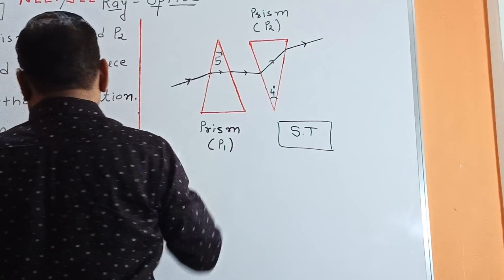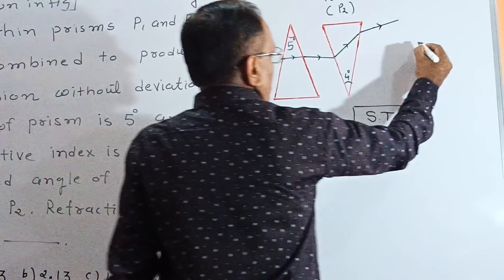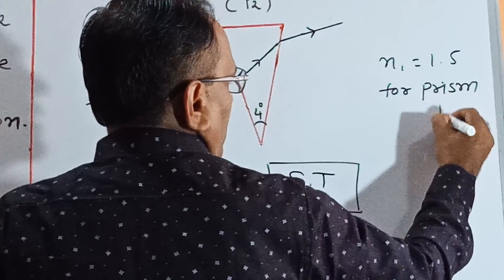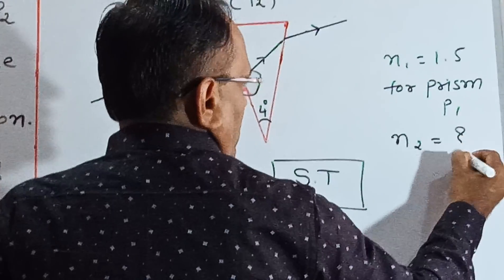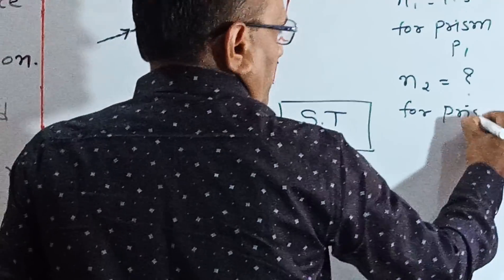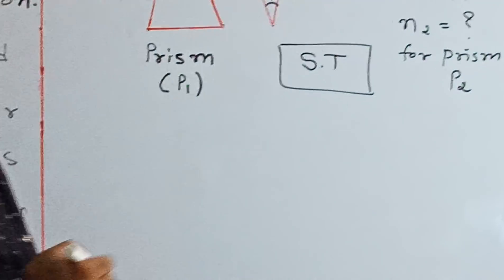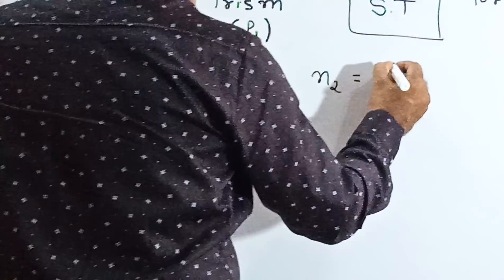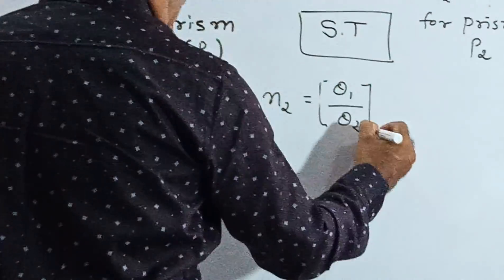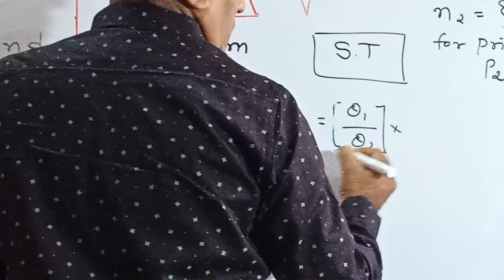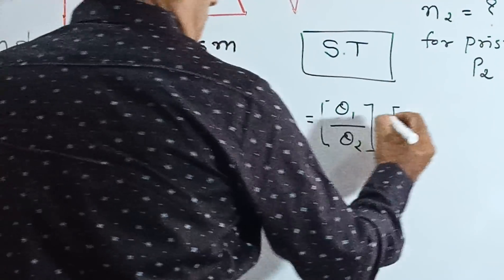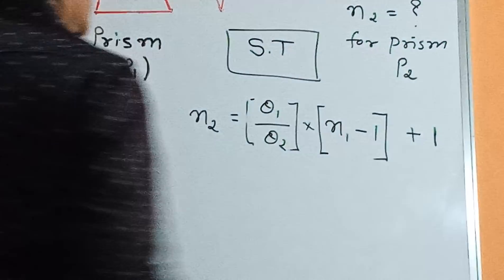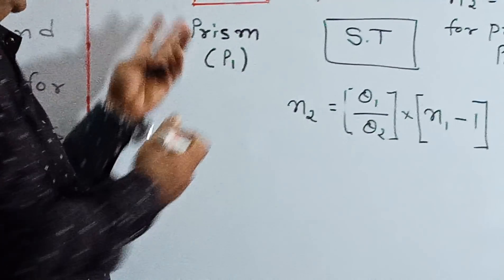For prism, N1 is equal to 1.5 for prism P1, and N2 is required for prism P2. The short trick is N2 equals theta1 by theta2 into one bracket, N1 minus 1 in another bracket, plus 1. This is the short trick for solving two thin prisms.